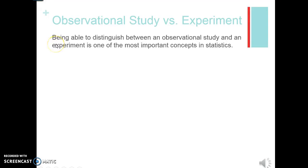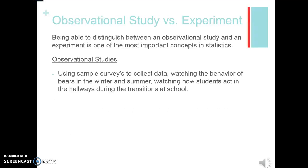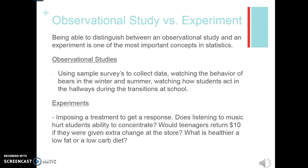Being able to distinguish between an observational study and an experiment is one of the most important things in statistics. With an observational study, we use a sample survey to collect data. We could potentially be watching the behavior of bears in winter and summer, or watching how students act in hallways during school transitions — we're just watching something occur. We're not imposing any sort of treatment. With an experiment, you're imposing a treatment to get a response.